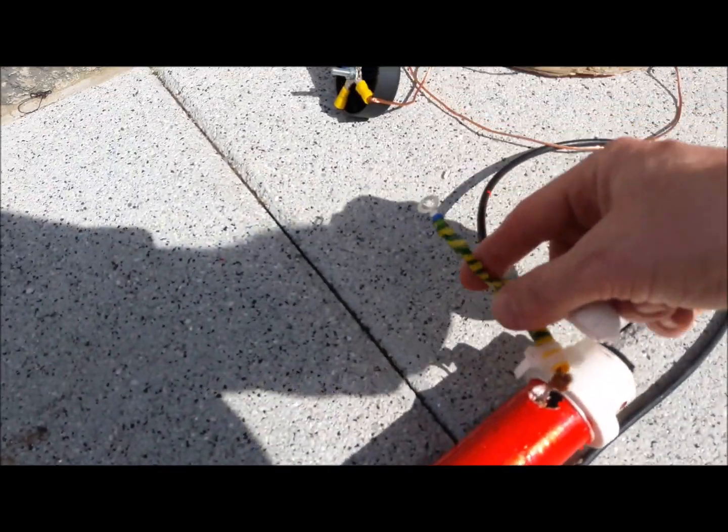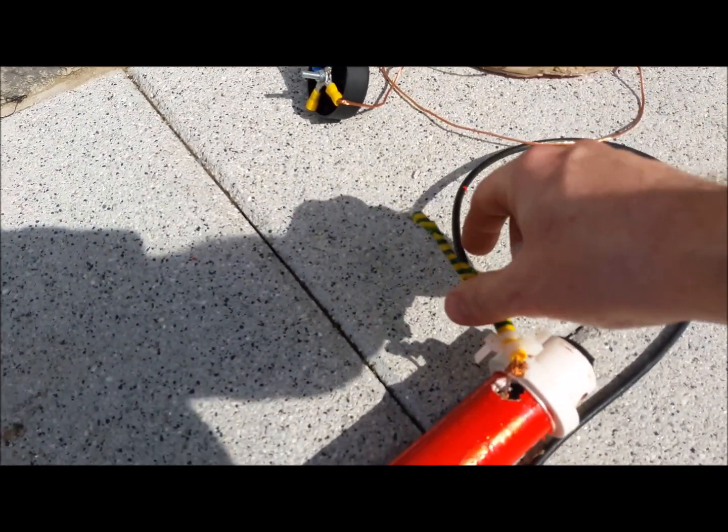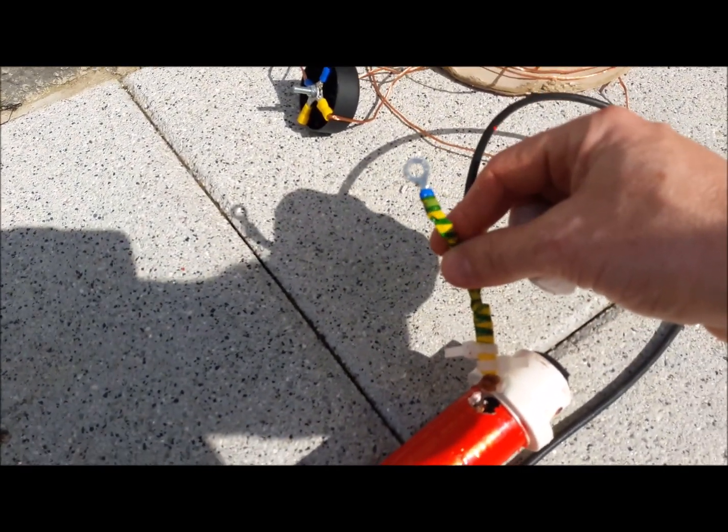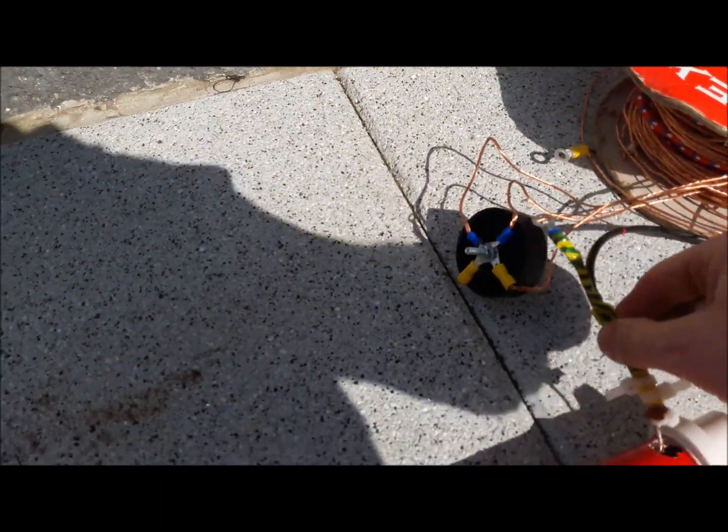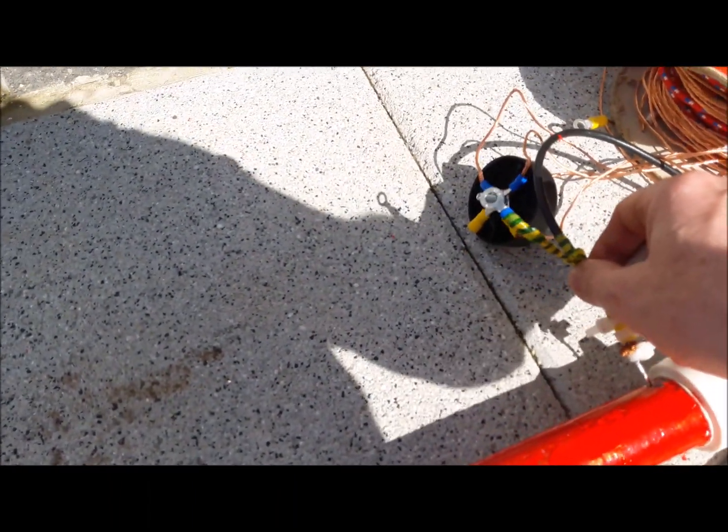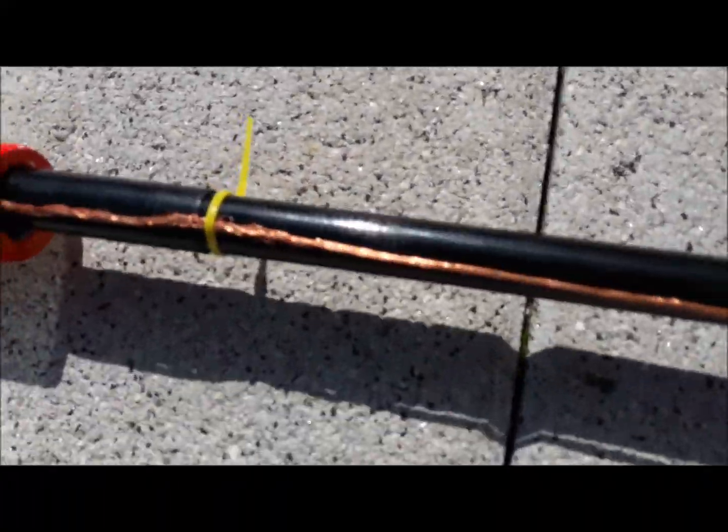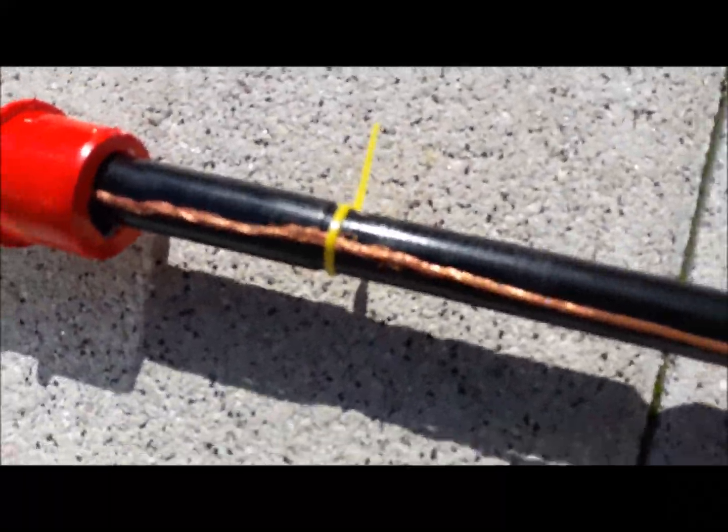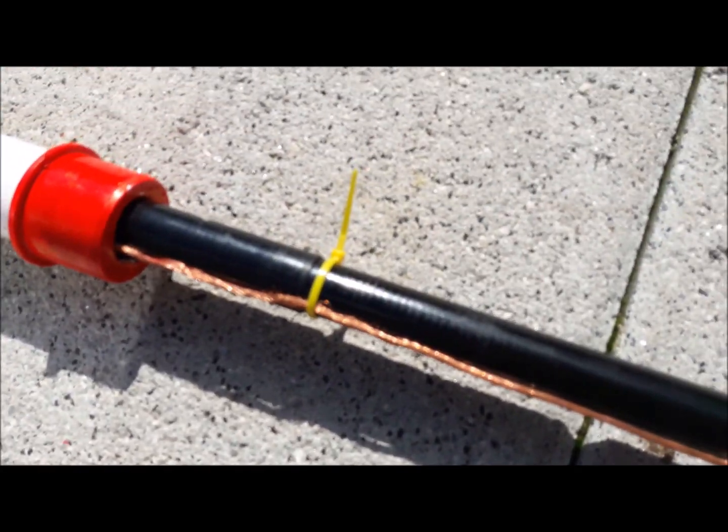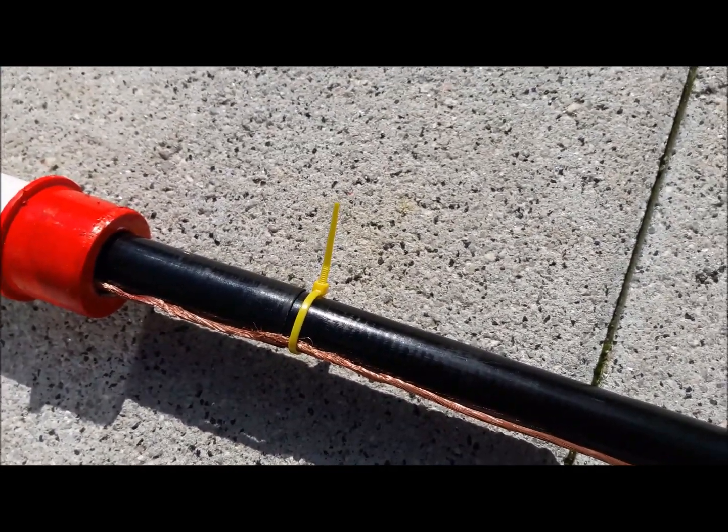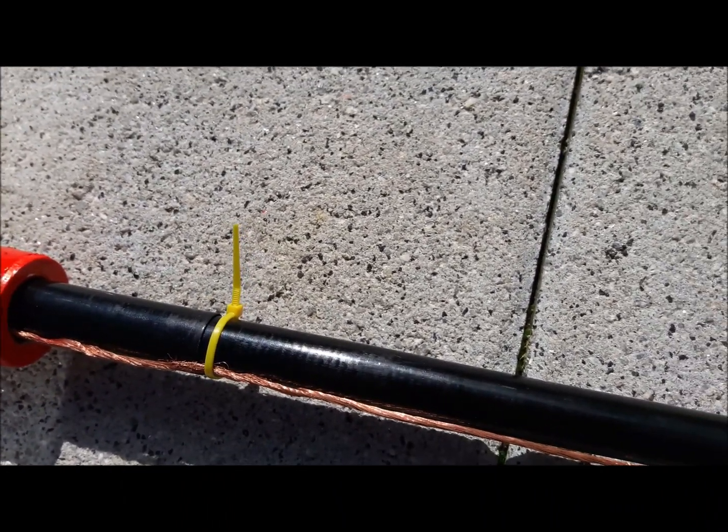So that will just connect onto that when the ground radials are in the ground. The wire itself is held on with cable ties on the way up. What I found was when I put it up initially, the wire, if it's hanging free, actually drags down the top of the fishing pole because the copper is heavy enough to do that.